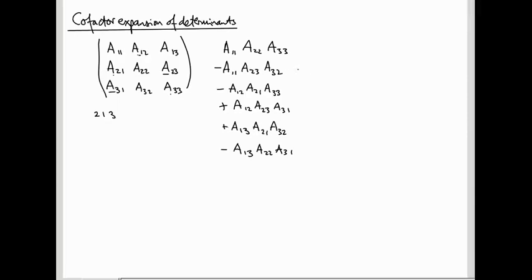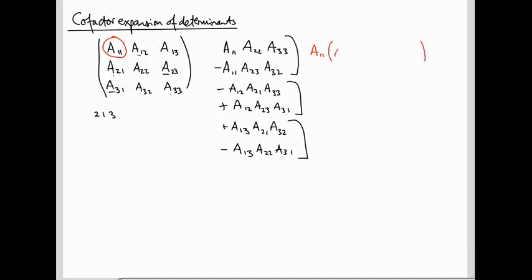Now, we can group these into three sets of terms. The first group are the ones that contain a factor of A11, where we picked A11 as our first entry. So this is A11 times something — and that something is A22·A33 minus A23·A32. And you'll notice this expression is exactly the determinant of the 2x2 submatrix in the bottom right.